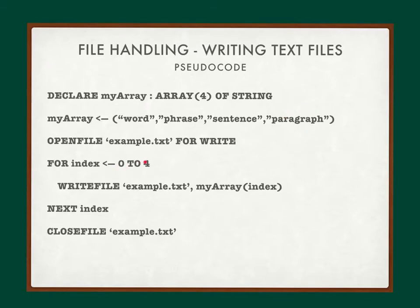Once the file is open, we have a file handle variable in memory. We use a simple fixed loop that iterates five times from zero to four, writing to example.txt the current word found in the array. So at index zero it writes 'word', at index one it writes 'phrase', at index two 'sentence', at index three 'paragraph', and at index four it writes a blank or empty line.